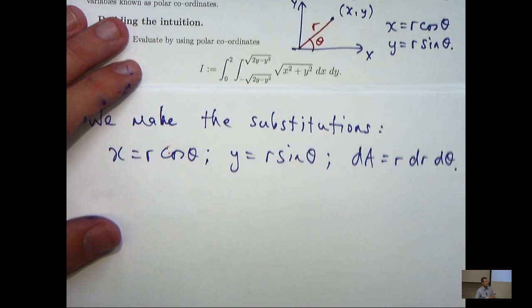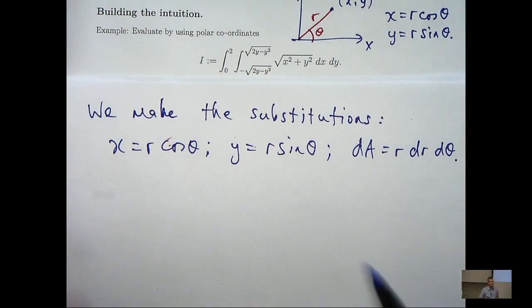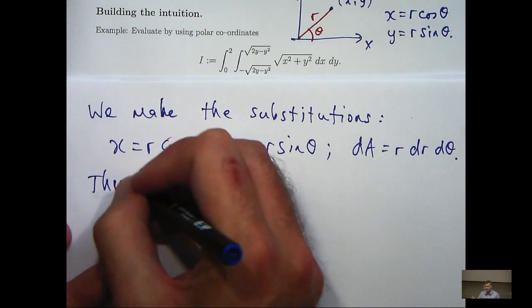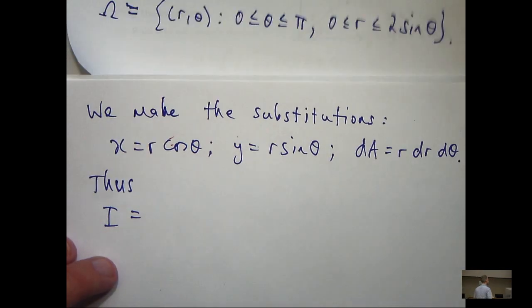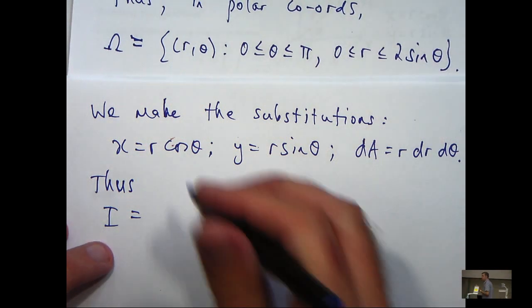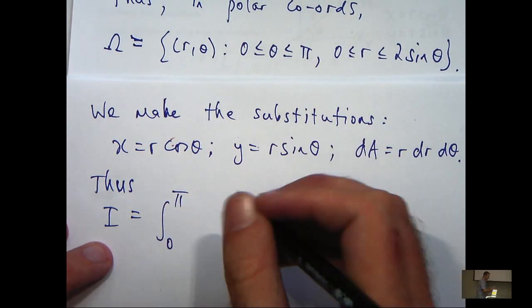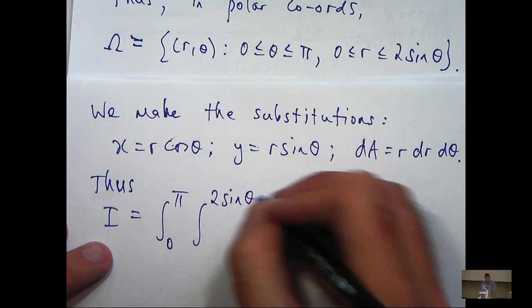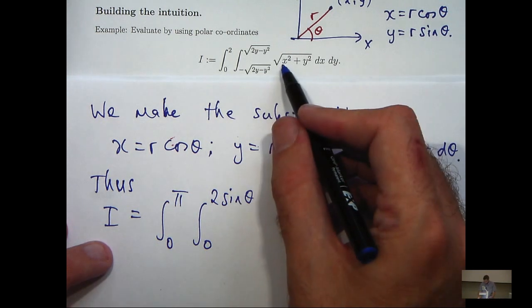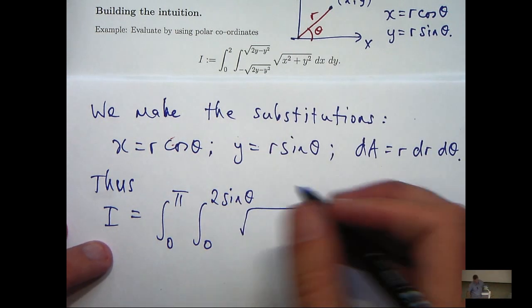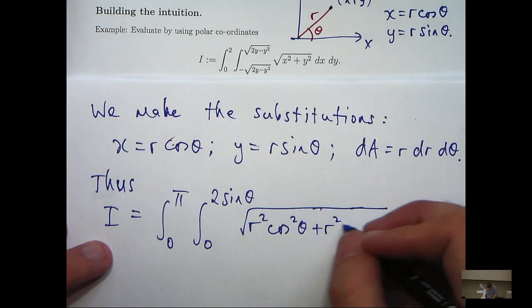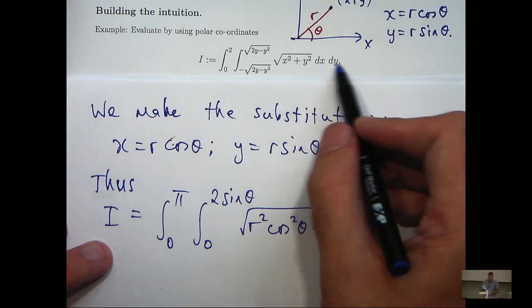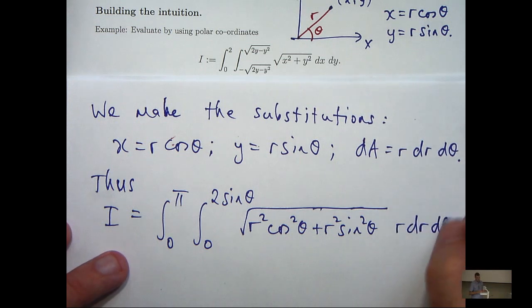So let's think back to our original problem and transform via a substitution. So we've got our limits of integration here, so let's write them down first. And then we replace x with r cos theta, y with r sin theta. And we replace dA with r dr d theta.